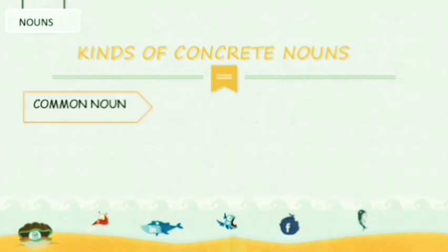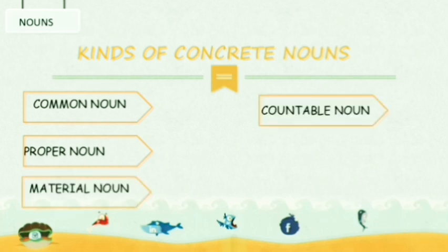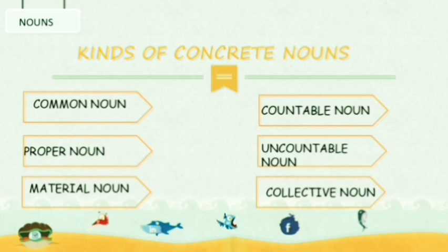Shall we start to see the concrete nouns? Children, say along with me. The first one is common noun. The second one is proper noun. Third one is material noun. Fourth one is countable noun. Fifth one is uncountable noun. Sixth one is collective noun. So these are the six different kinds of concrete nouns. In this class, we are going to see only about common noun, proper noun and material noun. The remaining nouns we will see in our next class.